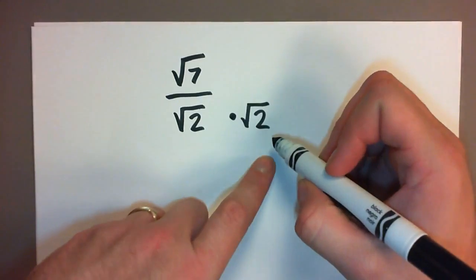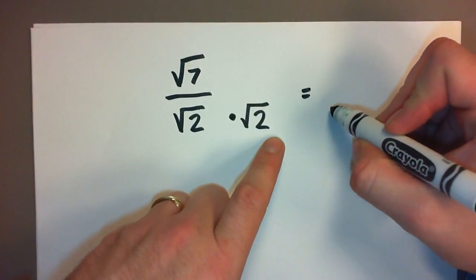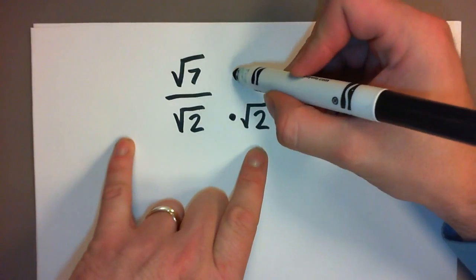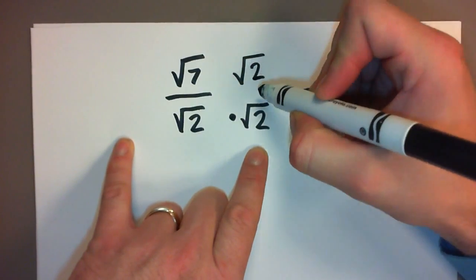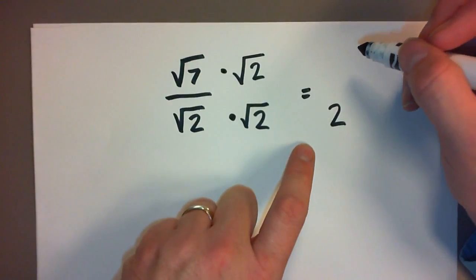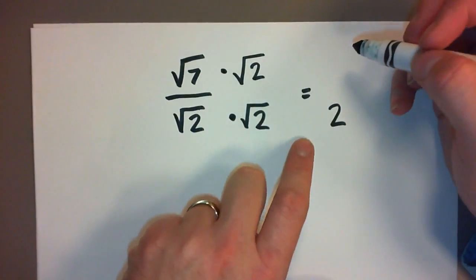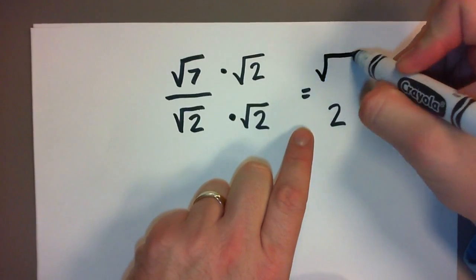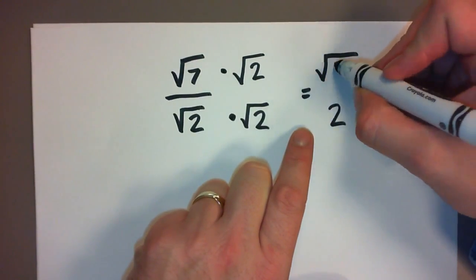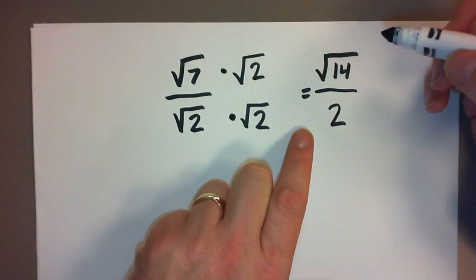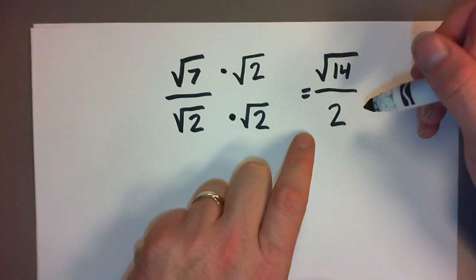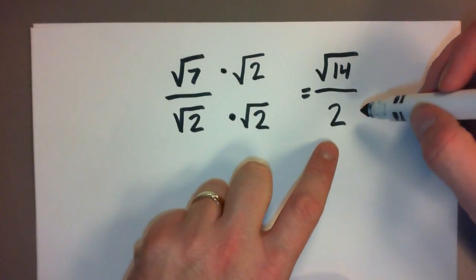The square root of 2 times the square root of 2 is just 2. Now if I multiply the bottom by that, I have to multiply the top by the same thing or else my fraction is going to have a different value. The square root of 7 times the square root of 2 is the square root—and we multiply the numbers under the radical—so 7 times 2 is 14. That means the square root of 7 divided by the square root of 2 is the same thing as the square root of 14 divided by 2.